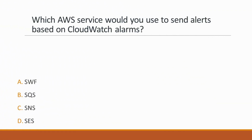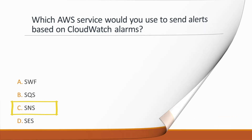Next question: Which AWS service would you use to send alerts based on CloudWatch alarms? Options: A. SWF, B. SQS, C. SNS, D. SES. Correct answer is option C, SNS, because CloudWatch alarms can use an EC2 action, an auto-scaling action, or a notification sent to SNS — AWS Simple Notification Service.